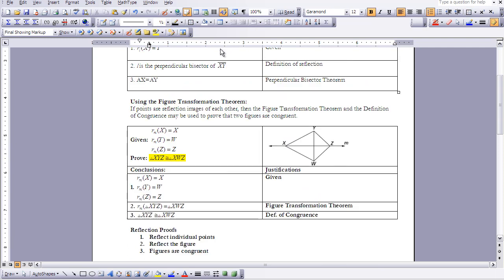The next thing we're going to do in this lesson is use the Figure Transformation Theorem to prove that two figures are congruent to each other. As you see here, we have a picture of a set of triangles that have been reflected over line M.